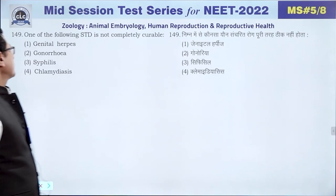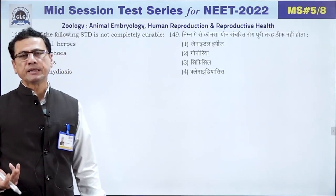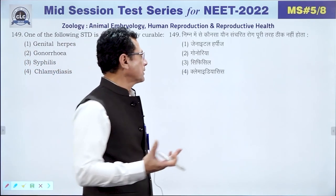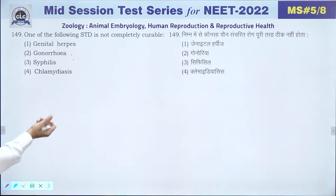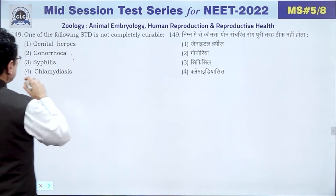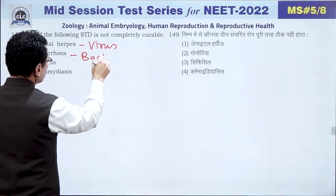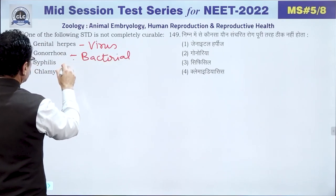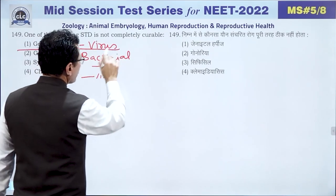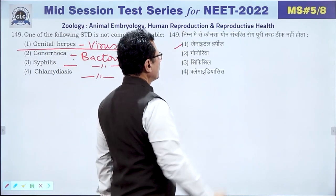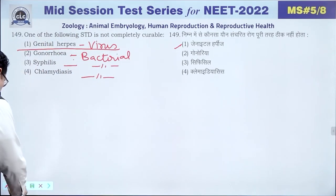Question 149: Among STDs, genital herpes is not completely curable because it is caused by a virus. Gonorrhea and syphilis are bacterial and treatable. Genital herpes cannot be fully cured. The answer is 1 — genital herpes.